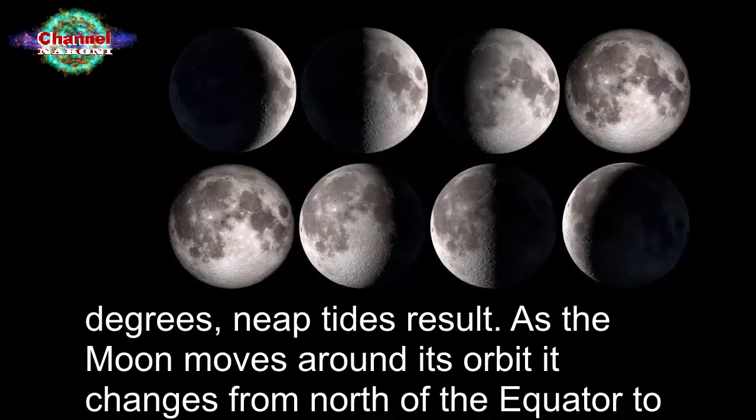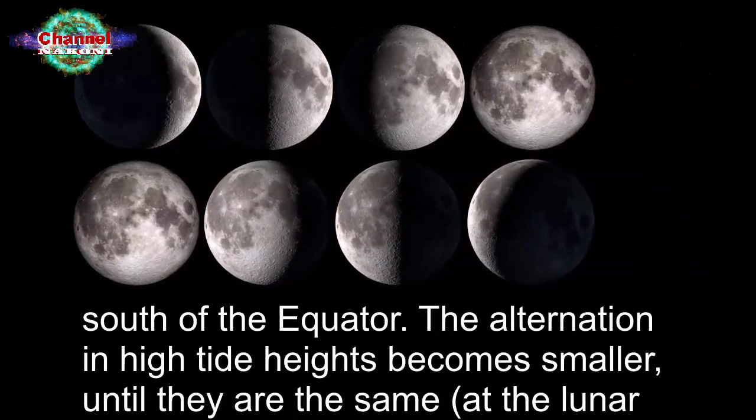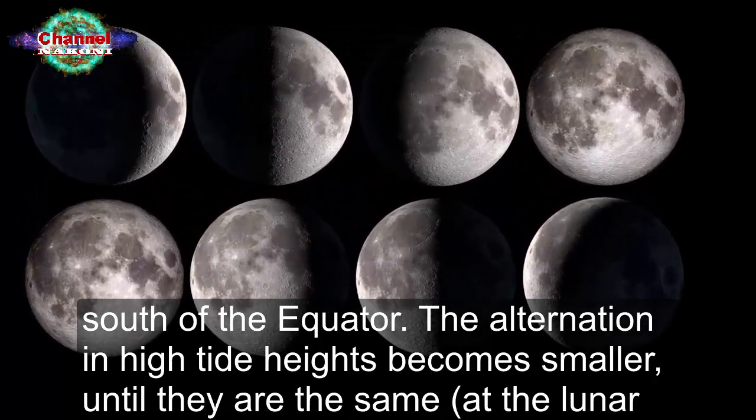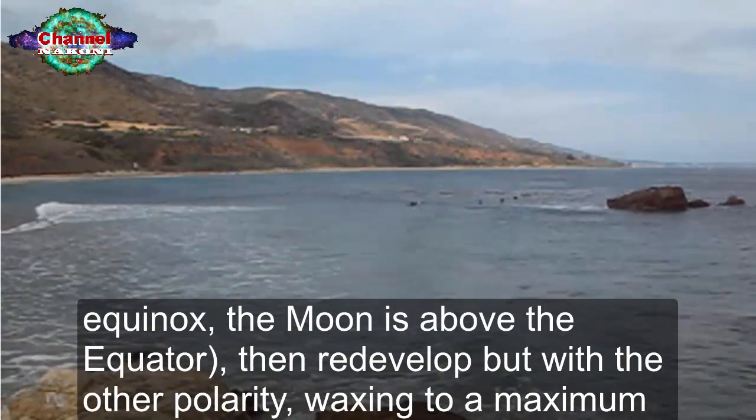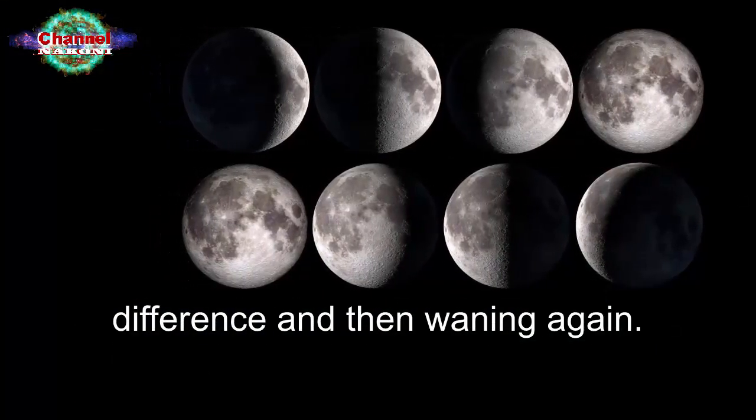As the moon moves around its orbit, it changes from north of the equator to south of the equator. The alternation in high tide heights becomes smaller until they are the same at the lunar equinox, when the moon is above the equator, then they redevelop but with the other polarity, waxing to a maximum difference and then waning again.